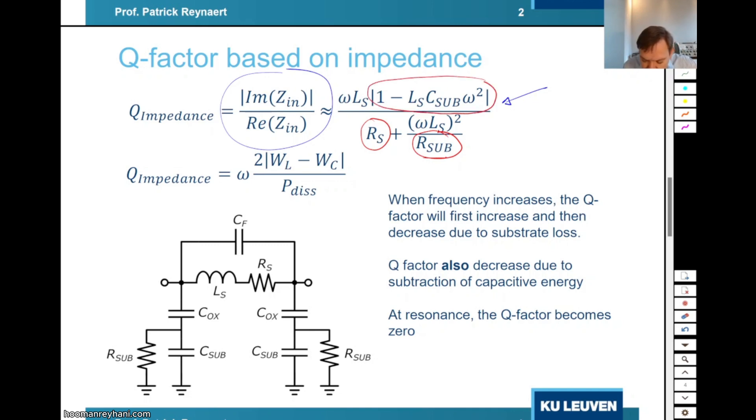And we also take into account the fact that as we get closer to the self-resonance frequency, there is less inductance left to tune out. So that's the reason why we have a minus sign over here. That's also meaning that basically from the inductive energy, I'm subtracting the capacitive energy. And that's a quality factor definition based on impedances. So there are two reasons why the Q factor goes down. The first one is because of the self-resonance.